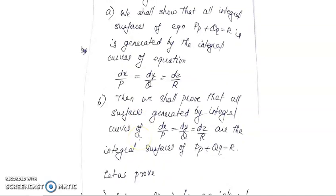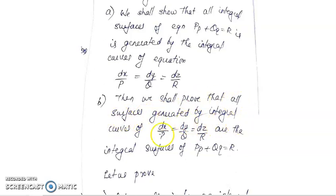Secondly, we will prove that all surfaces generated by the integral curves of dx/P equal to dy/Q equal to dz/R are solutions. When you solve this equation, you can get different solutions: U equal to C1, V equal to C2. If I choose different multipliers, you will get different U and V, and all the surfaces generated by the integral curves will be solutions of Pp plus Qq equal to R.